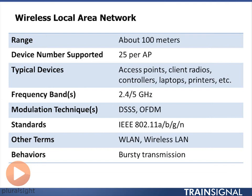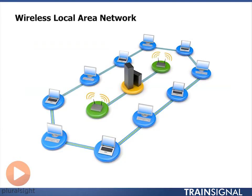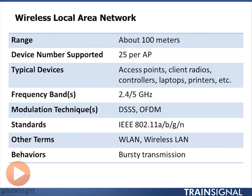Wireless LANs are where we're going to focus our attention in this course. They have better coverage — wider than the personal area network — up to about 100 meters, or 200 to 400 feet. The difference here is that you're not just connecting one person's personal devices, but several people may be connecting, as this illustration shows with several computers connecting to a wireless access point. With a wireless LAN, you typically think about connecting to the corporate network or the internet, with multiple people forming a wireless network. 802.11 is the dominant standard in wireless LANs.